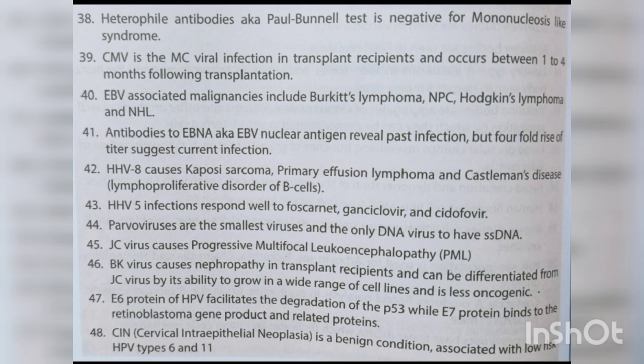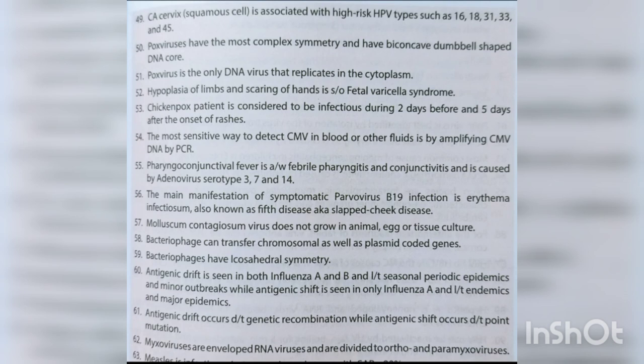Parvoviruses are the smallest viruses and the only DNA viruses to have single-stranded DNA. JC virus causes progressive multifocal leukoencephalopathy. BK virus causes nephropathy in transplant recipients and can be differentiated from JC virus by its ability to grow in a wide range of cell lines and its less oncogenic nature. E6 protein of HPV facilitates degradation of p53 while E7 protein binds to the retinoblastoma gene product. CIN is a benign condition associated with low-risk HPV types 6 and 11; carcinoma cervix is associated with high-risk HPV types 16, 18, 31, 33 and 45.